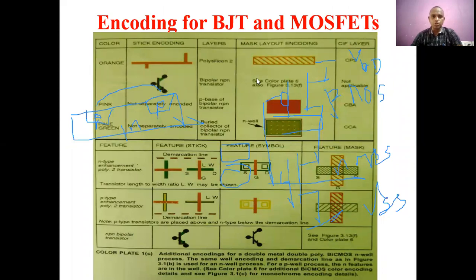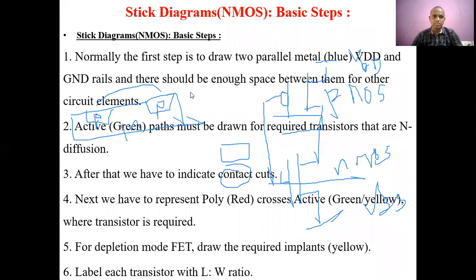Similarly, encoding for BJT and BiCMOS: Polysilicon-1 uses red color and Polysilicon-2 uses orange color. A bipolar transistor is represented with its standard symbol. These details will be covered in the next session.